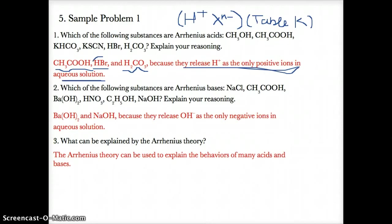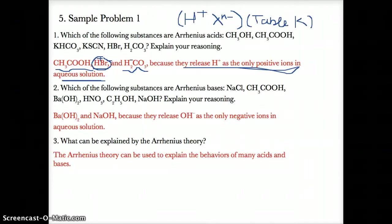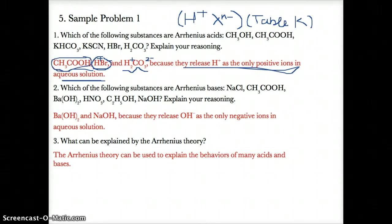HBr is an acid because you have H+ in front followed by the negative ion Br-. H2CO3 is an acid because you have H+ in front followed by the negative ion CO32-. CH3COOH is an acid because it's listed on table K as acetic acid.